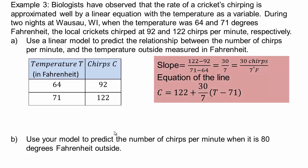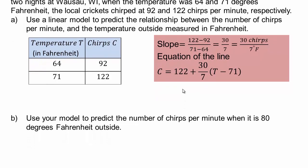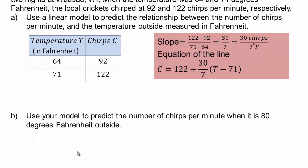So in part B, you're asking use your model to predict the number of chirps per minute when it's 80 degrees Fahrenheit outside. So when you have 80 degrees, so you're going to put 80 in for T, so which is 9 degrees difference. So 30 over 7 times 9 plus 122, you can check for yourself approximately 161 chirps.